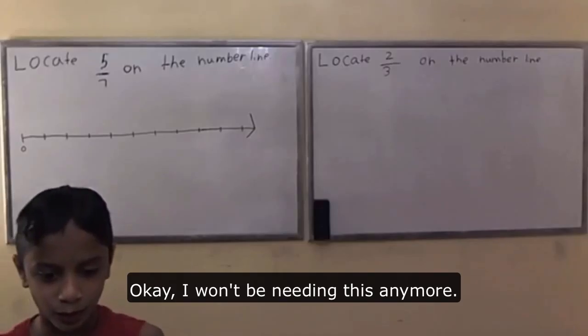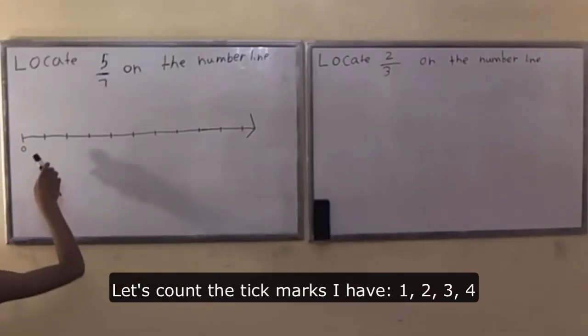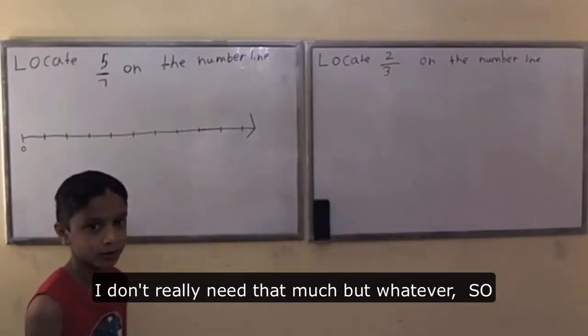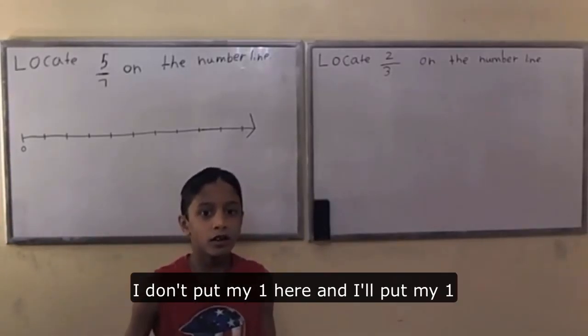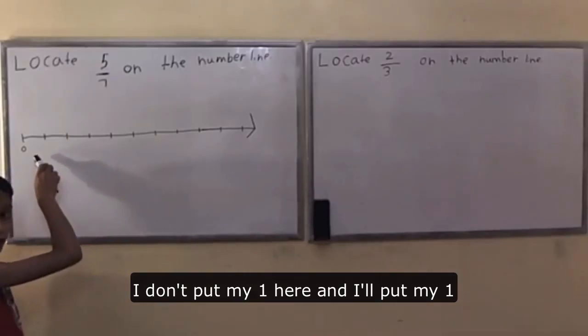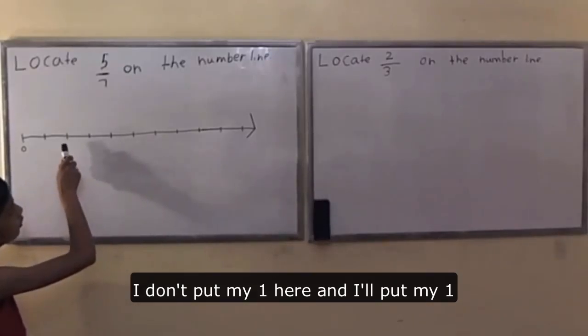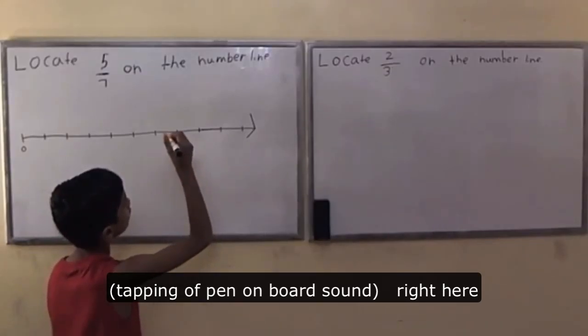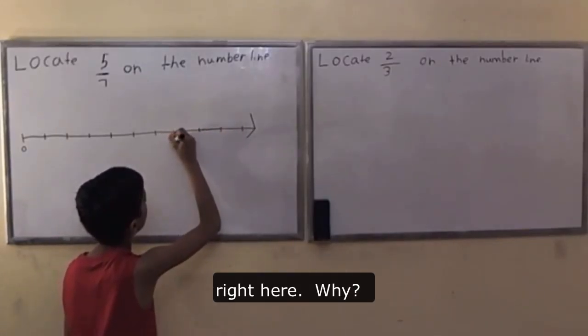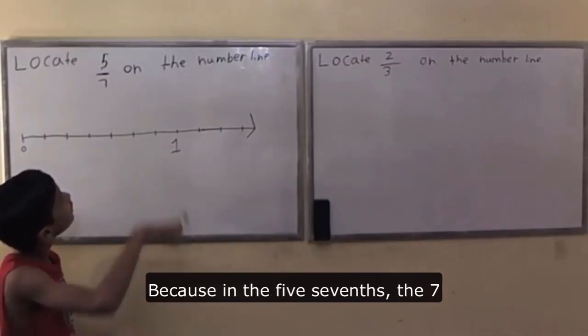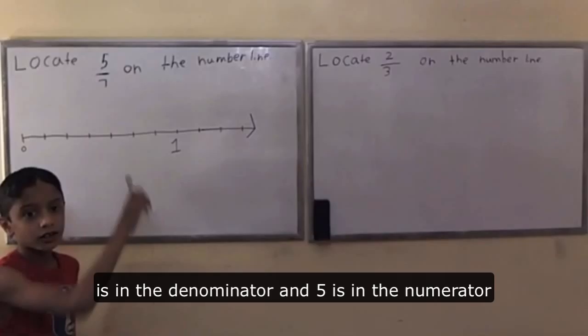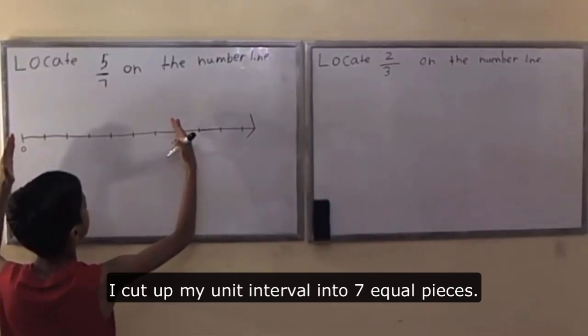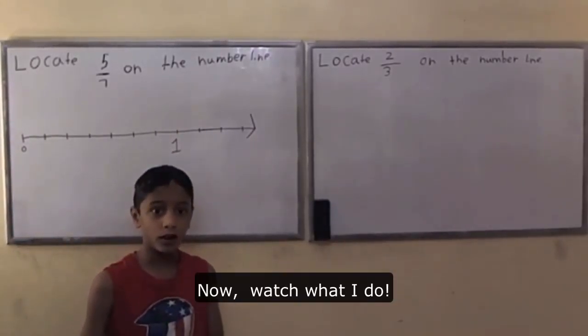Okay, I won't be needing this anymore. Let's count the tick marks I have: one, two, three, four, five, six, seven, eight, nine, ten. I don't really need that, so I don't put my one here. I will put my one right here. Why? Because in 5/7, the seven is in the denominator, the five is in the numerator.